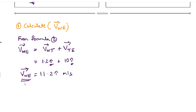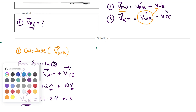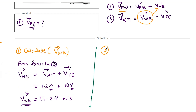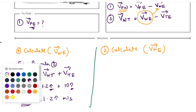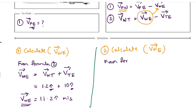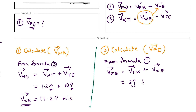Now that we have the velocity of waiter with respect to earth, we substitute this into formula one to get the desired velocity. From formula one: velocity of fly with respect to earth equals velocity of fly with respect to waiter plus velocity of waiter with respect to earth. Substituting: velocity of fly with respect to waiter is 2 j-cap, and velocity of waiter with respect to earth is 11.2 i-cap. So velocity of fly with respect to earth is 11.2 i-cap plus 2 j-cap meters per second.